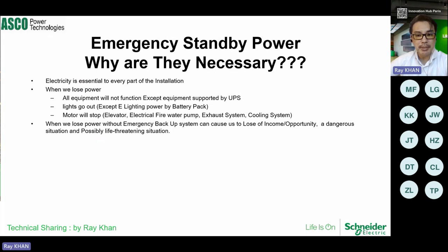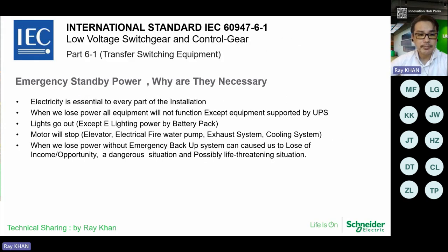When we lose power or the connection from the grid itself, critical systems will be badly impacted — especially in projects like data centers, hospitals, military, and production sectors. Emergency power systems must be able to back up systems such as fire pump lighting, fire pump controls, exhaust systems, and cooling systems. This training will emphasize systems that are critical, requiring emergency power to back up the power supply.